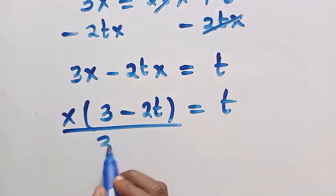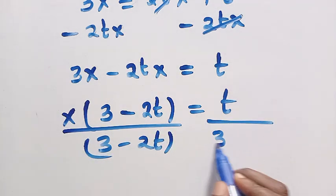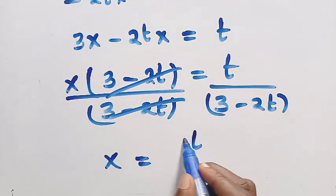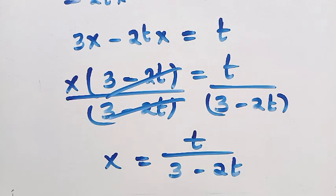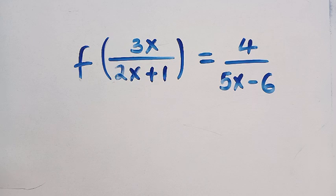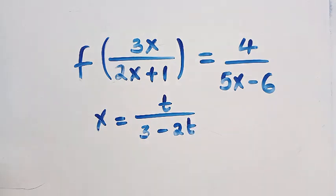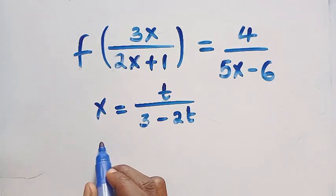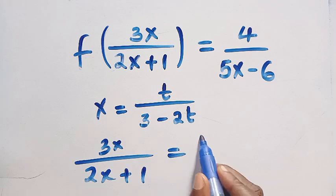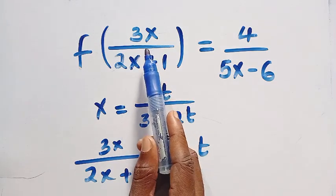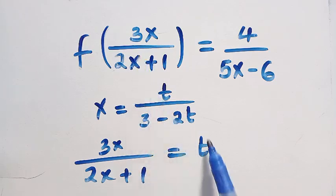Dividing both sides by 3 minus 2t, this cancels, and we have successfully made x the subject: x equals t divided by 3 minus 2t. Now let's come back to the given function and replace every single x with t divided by 3 minus 2t. Since we already let 3x over 2x plus 1 equal t, we just equate that side to t and focus on replacing x in the right-hand side.